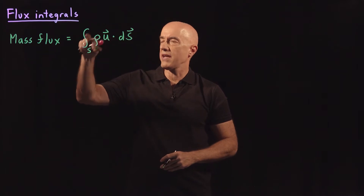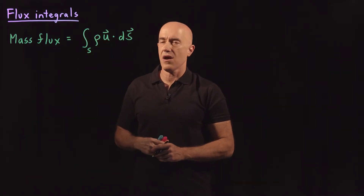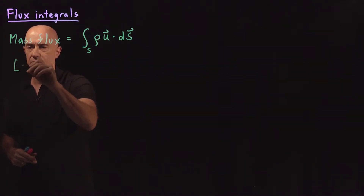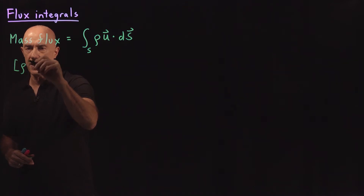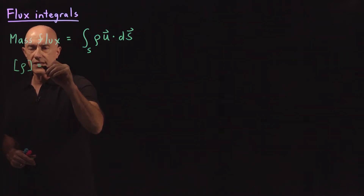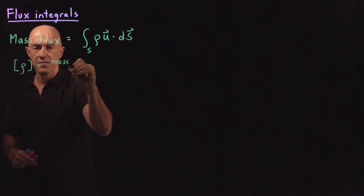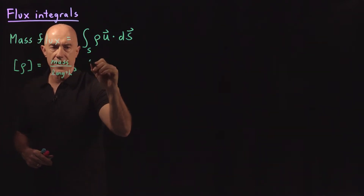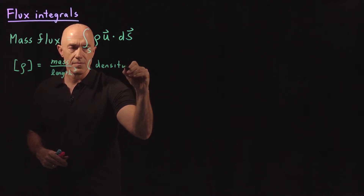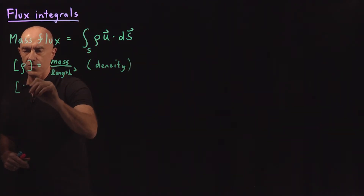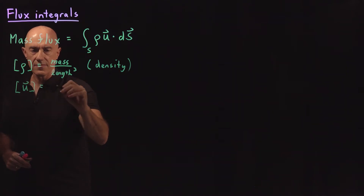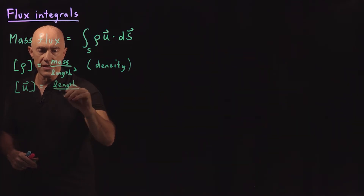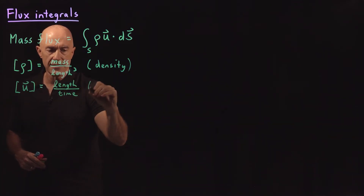Let's break down what exactly is the meaning of mass flux. Rho is the density — a density has units of mass per unit volume, or length cubed. That's the density of the fluid. The velocity of the fluid has units of length per unit time — length over time. That's the velocity.